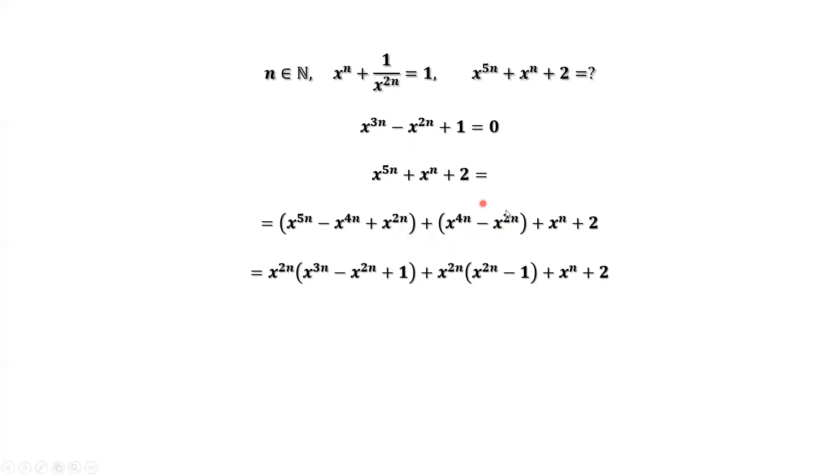For the second group, x^(2n) is the common factor. We factor it out. This part is zero.